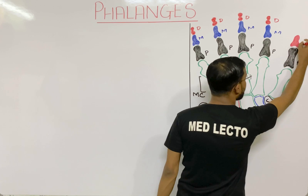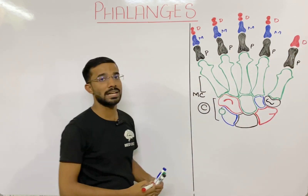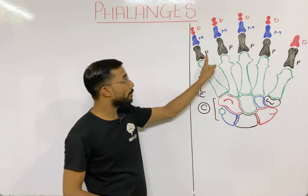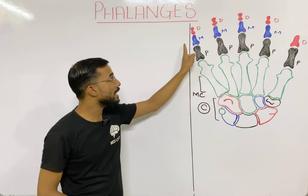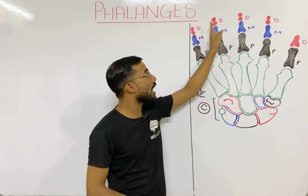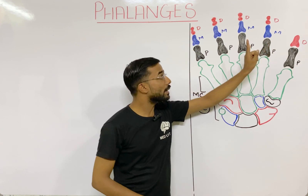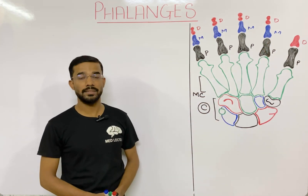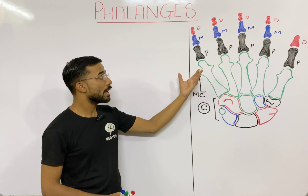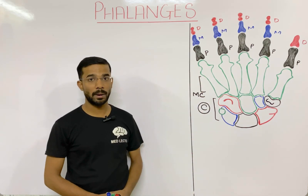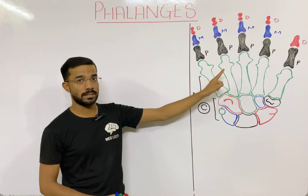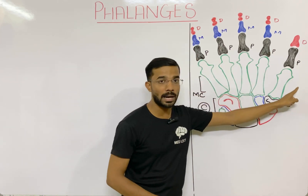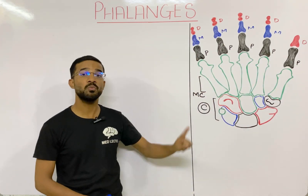The thumb also has distal phalanges. So: proximal phalanges, then middle, then distal phalanges — but the thumb has no middle phalanges. That is the important thing to remember. The total bones in the four fingers and thumb will be 14 in one hand and 28 in both hands.